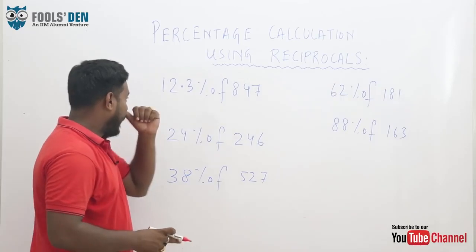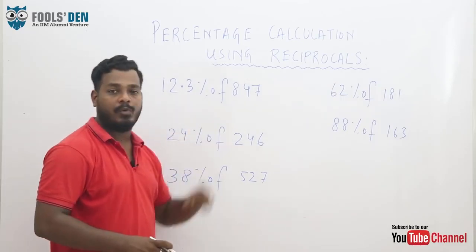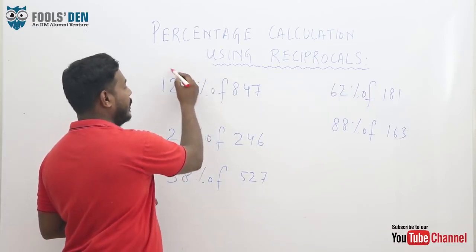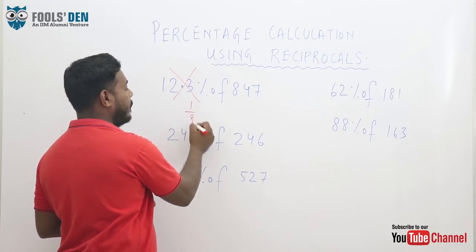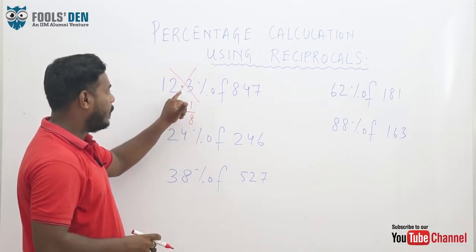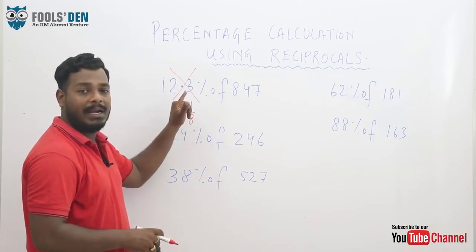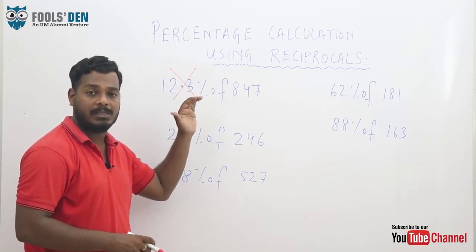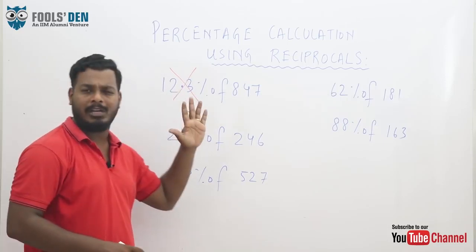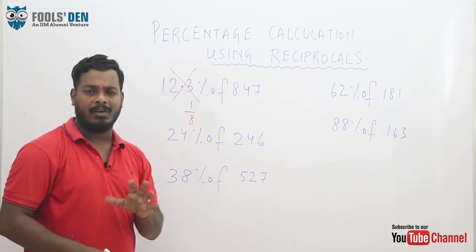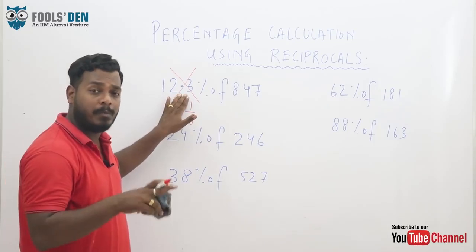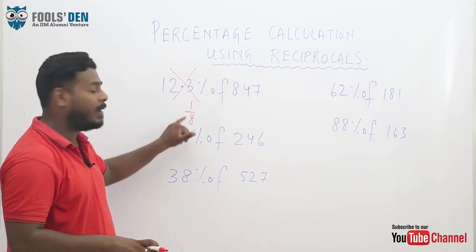If I need to calculate 12.3 percent of 847, you have to remember ki reciprocals mein 12.3 percent is nothing but 1 by 8. 1 by 8 ko agar mein percentage mein likhta hon, toh it is 12.5 percent and it can be approximated to 12.3. 12.3 and 12.5 are almost the same. So instead of calculating 12.3 percent, I'll calculate 12.5 percent, which is nothing but 1 by 8.